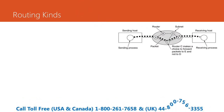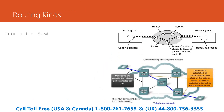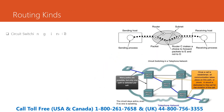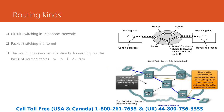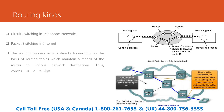Routing kinds include circuit switching in telephone networks and packet switching in the internet. The routing process usually directs forwarding on the basis of routing tables, which maintain a record of the routes to various network destinations. Thus, constructing routing tables held in the router's memory is very important for efficient routing.